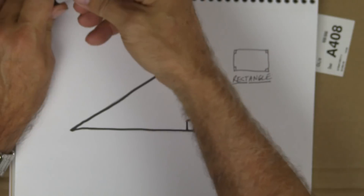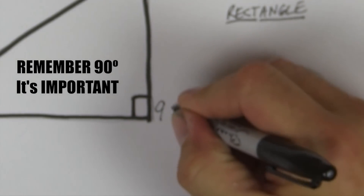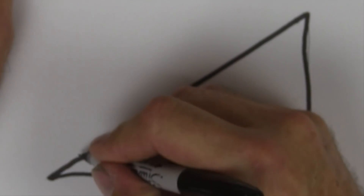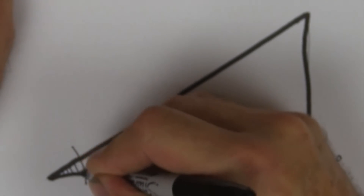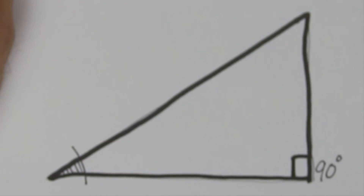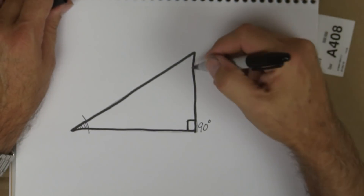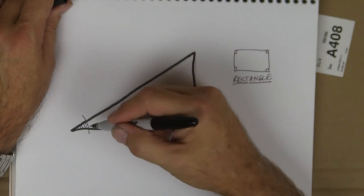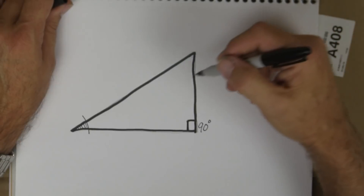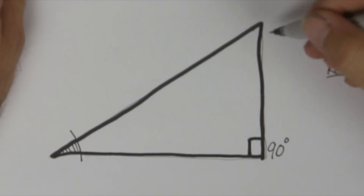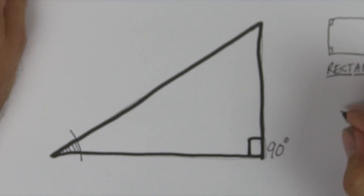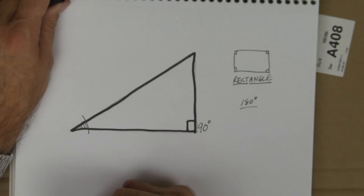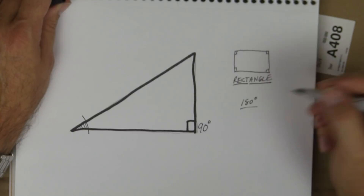So there are a couple of things about triangles you need to know. The first thing is that this corner is always going to be 90 degrees, and that's going to be the right angle. This is the angle that we're referencing. It doesn't matter, but this is just typically the way it's drawn. It could be this one right here if we just change the position of the triangle. Another peculiarity of triangles is that if you add all three angles together, they have to equal 180 degrees. Lefty loosey, righty tighty — 180 degrees in a triangle.